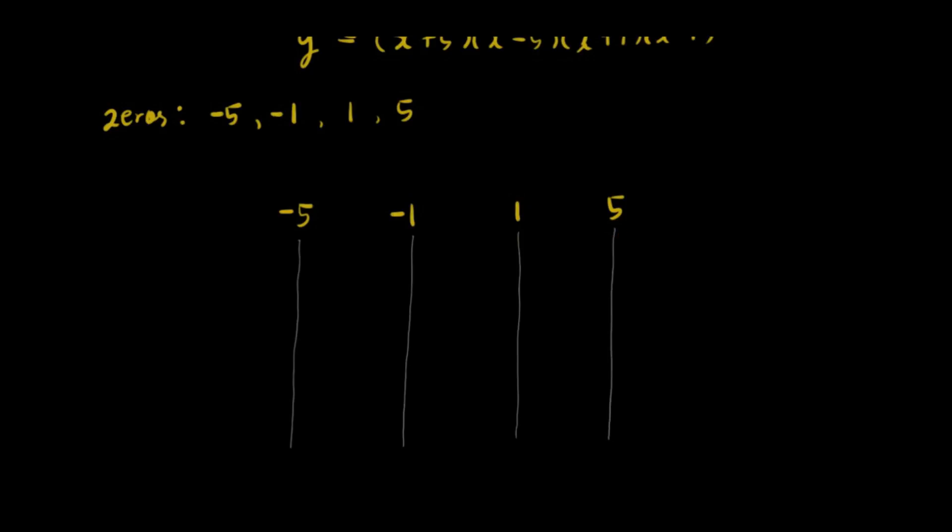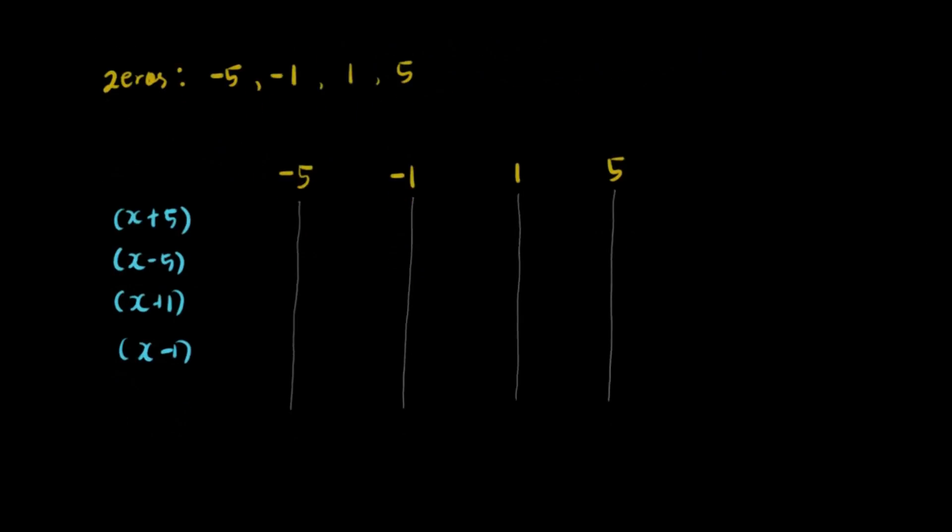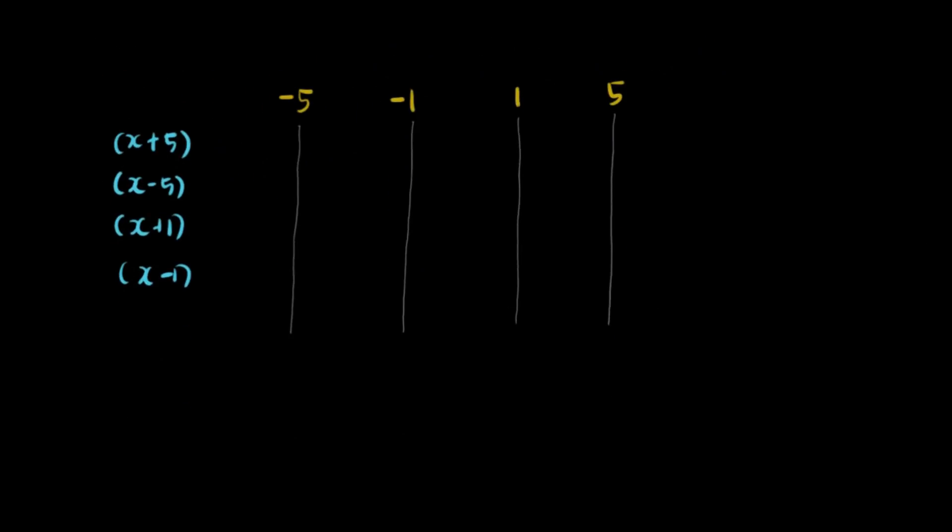And then we're going to write the factors on this side. So the factors are x plus 5, x minus 5, x plus 1, and x minus 1. And then you can put the function over on this line, y.